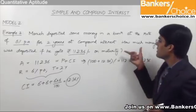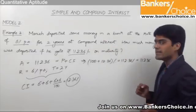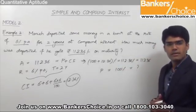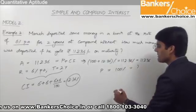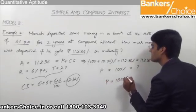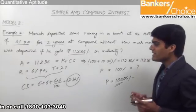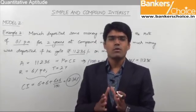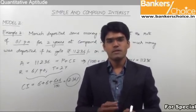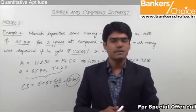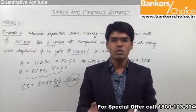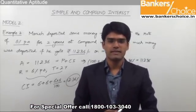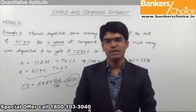We need to find the principal, which is always equivalent to 100%. By cross multiplication: principal = (100 × 11236) / 112.36 = ₹10,000. So as you can see, the concept of net or effective percentage is very useful for solving compound interest questions. For two years use a + b + ab/100; for three years apply the formula multiple times.